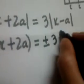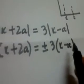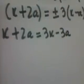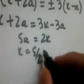We get x plus 2a equals plus or minus 3 times x minus a. This modulus equals this modulus, meaning it equals the positive value and also the negative value. Taking the positive sign, x plus 2a equals 3x minus 3a. So 3x minus x is 2x, and 3a plus 2a is 5a, giving x equals 5a/2.